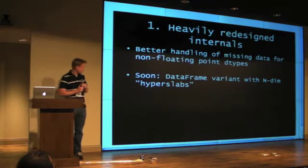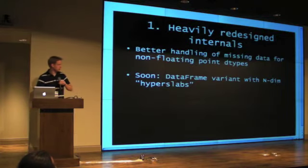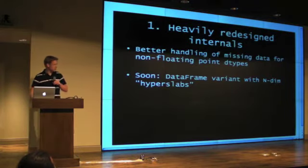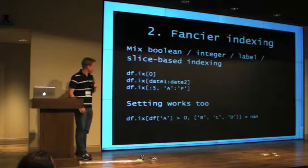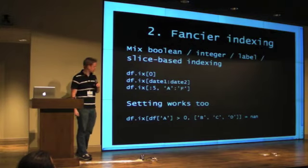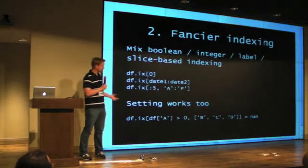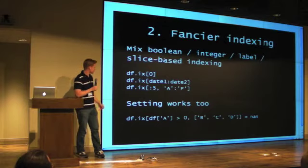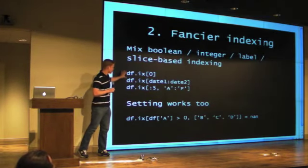I'm working currently on essentially laying the groundwork for an n-dimensional structure. In the past, Pandas only handled three dimensions and less, which is really all you need for finance and econometrics. But people keep asking for greater than three, so I'm giving in. Here's another thing that I gave in to recently — adding fancier indexing, something I stonewalled on for years it feels like, and I finally added.